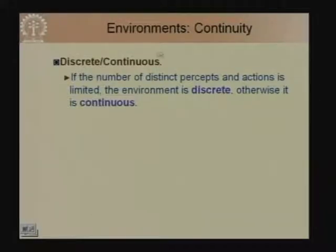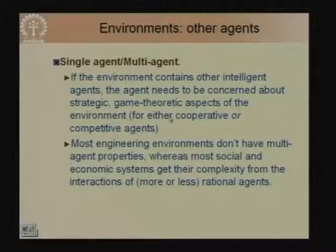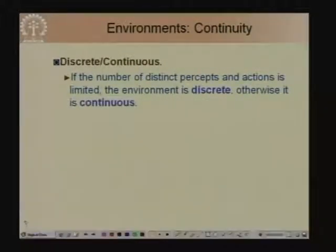Another dimension for characterizing environments is continuity — an environment is discrete or continuous. An environment is discrete if the number of distinct percepts, actions, and states are limited. An environment is continuous if the range of percepts or actions is continuous, or the number of states is so large we treat them as continuous.